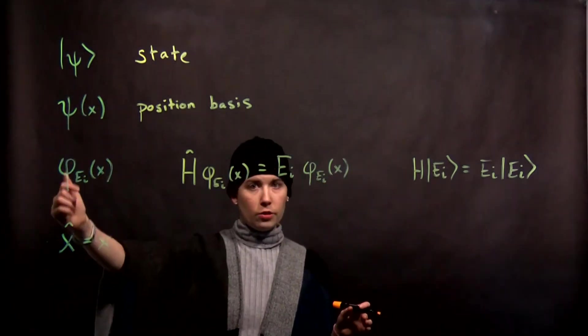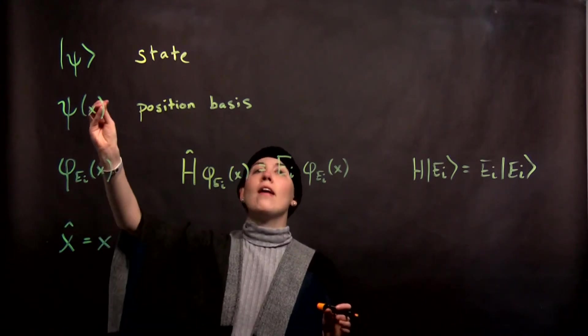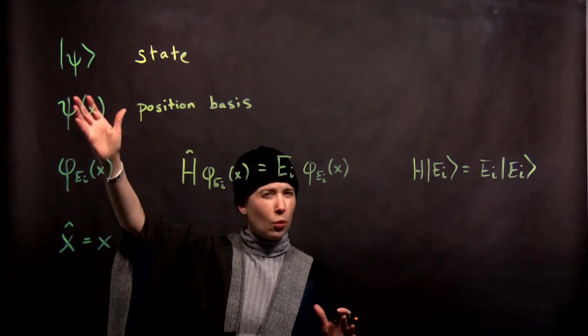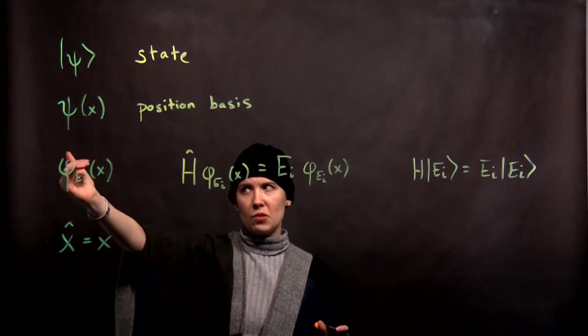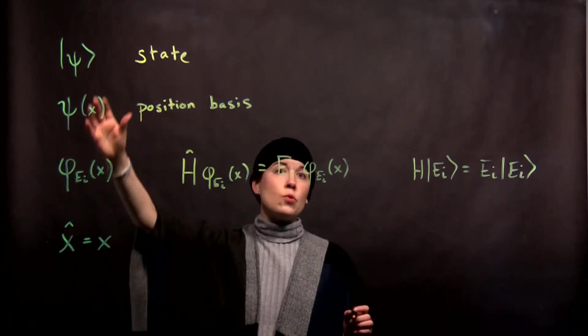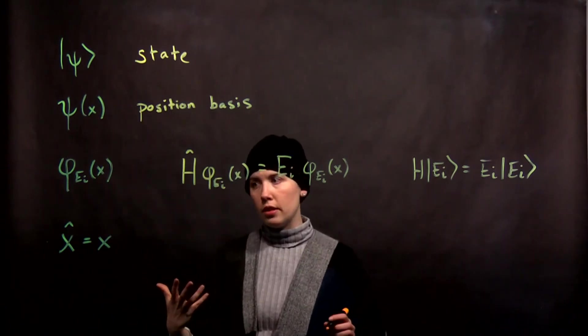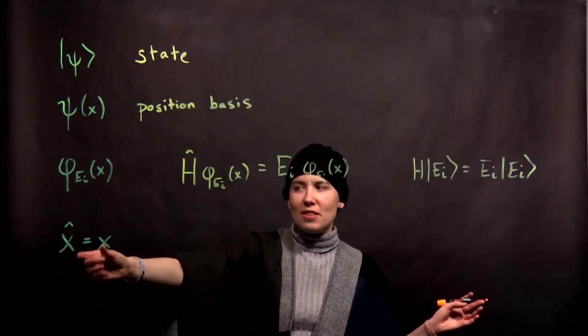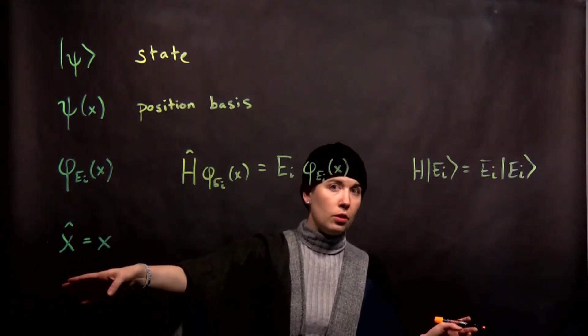So the key is that we are inherently putting different Greek letters, whether we mean a wave function that is an energy eigenstate or just some sort of state. So be careful about this and try to get used to using these different Greek letters correctly. And then last, we have our position operator.